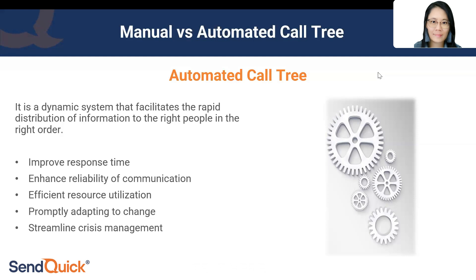The third benefit is optimized resource allocation. With automation, one person clicking a button is far more efficient than a group of representatives each manually activating their segment. In a manual tree, if one representative is unresponsive, the entire group under them won't be contacted. Automation ensures efficient utilization of resources.